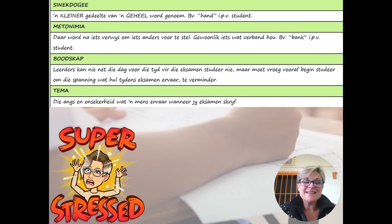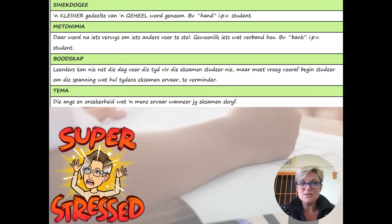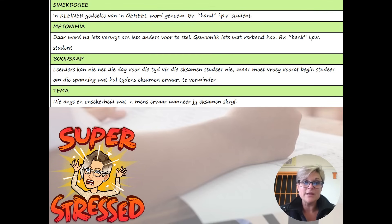Synecdoche is when they refer to something small but are actually talking about something big. For example, they talk about the child's hand instead of the entire student sitting at the desk. Metonymy has to do with when they refer to something that isn't directly related to the person, but you can make the reference. So when they refer to the desks of students being quiet, they say the desks are quiet, but they are actually meaning the students behind or in the desk.